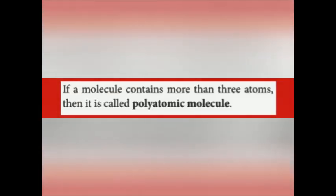What is a polyatomic molecule? If a molecule contains more than three atoms, then it is called a polyatomic molecule. For example, HNO₃ — here one hydrogen, one nitrogen, three oxygen — there are five atoms present in it. So it is a polyatomic molecule.